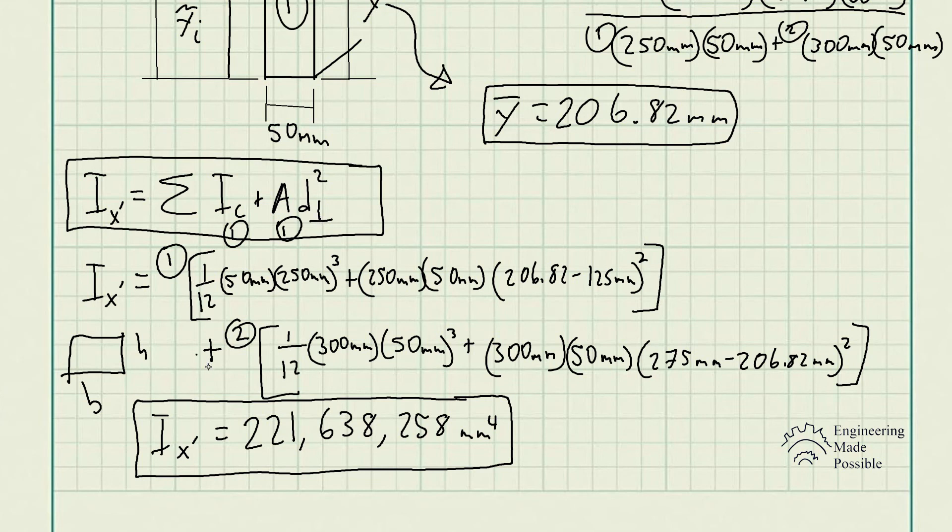Essentially, the higher the area moment of inertia, the more rigid the structure is going to be — the stronger it is and the more force it will be able to handle.